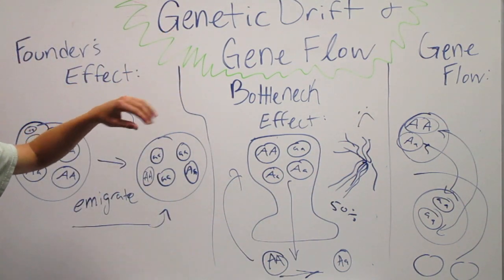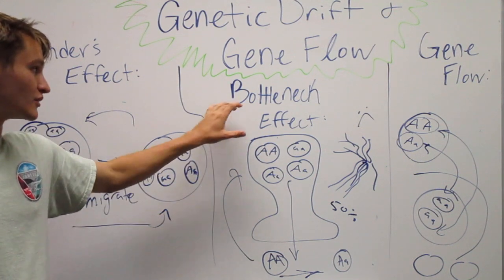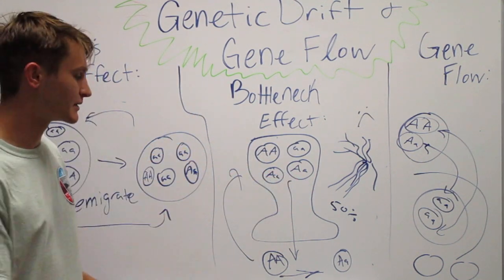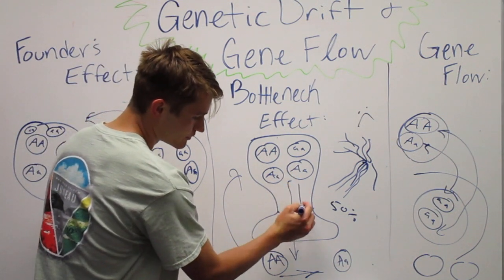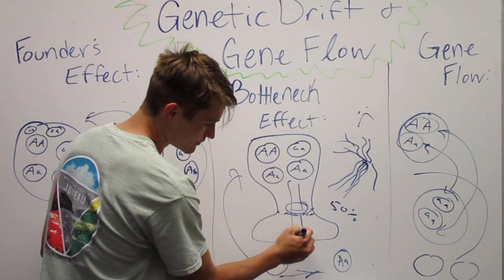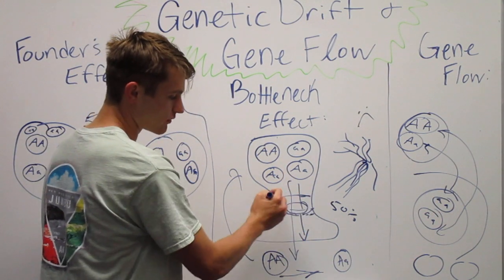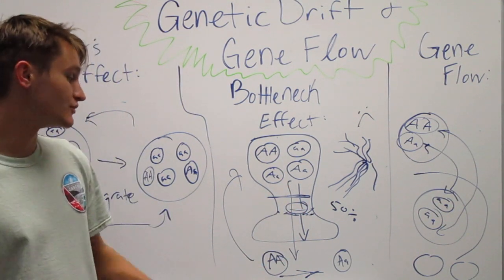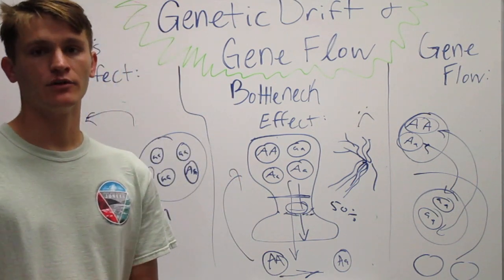Genetic drift is both the founder's effect and bottleneck effect. So bottleneck, you can think, that's why it's called bottleneck. That's why I drew the bottle. The bottleneck effect, only some of these guys can come through, only some of them can get through and survive, but most of them don't get out. Most of them stay behind. Most of them die off, and it's due to these traits.